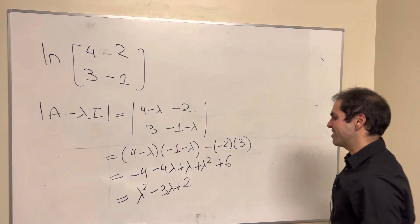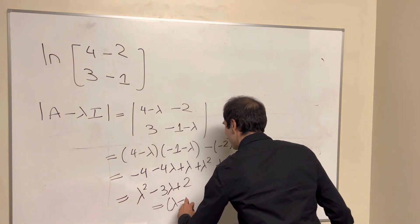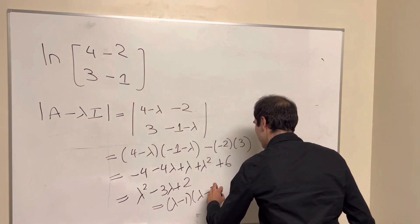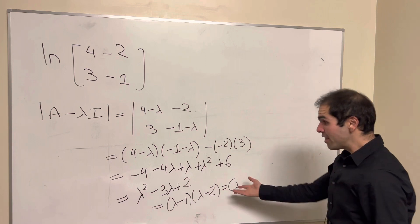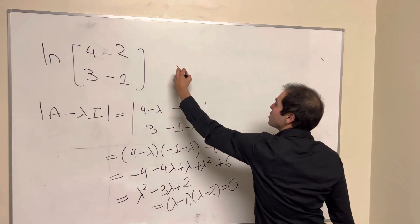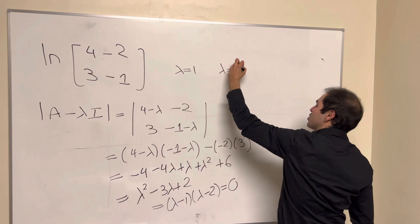Which is not too bad to factor out, because it's lambda minus 1 times lambda minus 2. And therefore the eigenvalues are just lambda equals 1 and lambda equals 2.